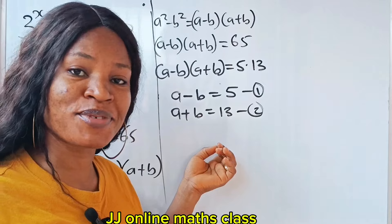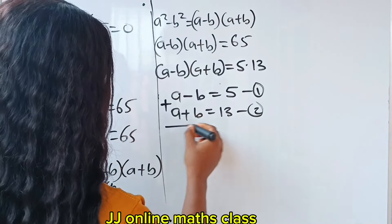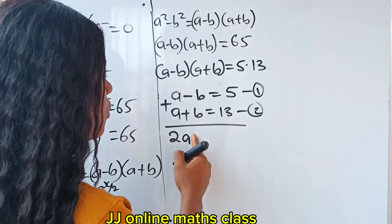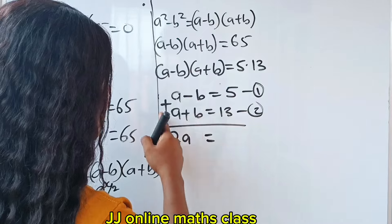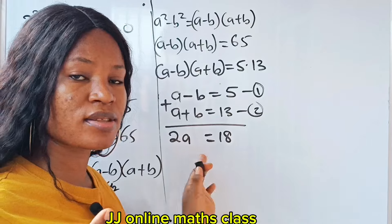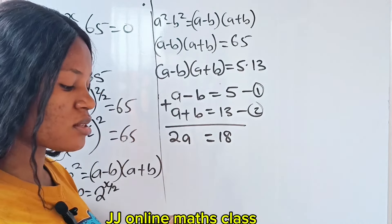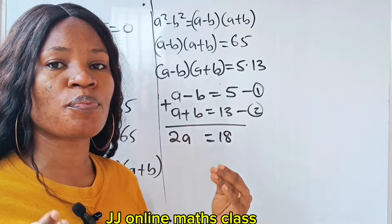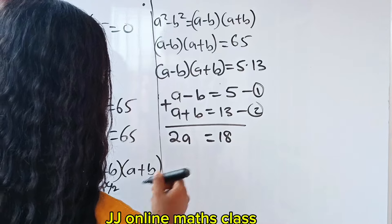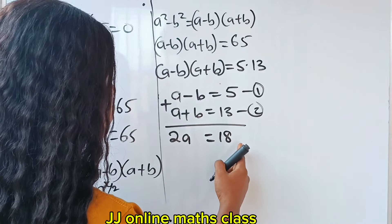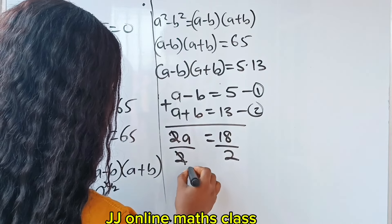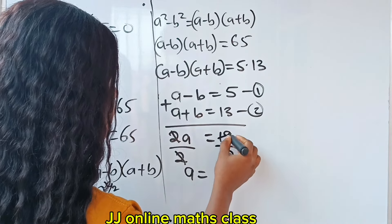Let's solve simultaneously. If we add the two equations, a plus a gives us 2a. Minus b plus b is 0. And 5 plus 13 is 18. So 2a equals 18. Dividing both sides by 2, we get a is equal to 9.